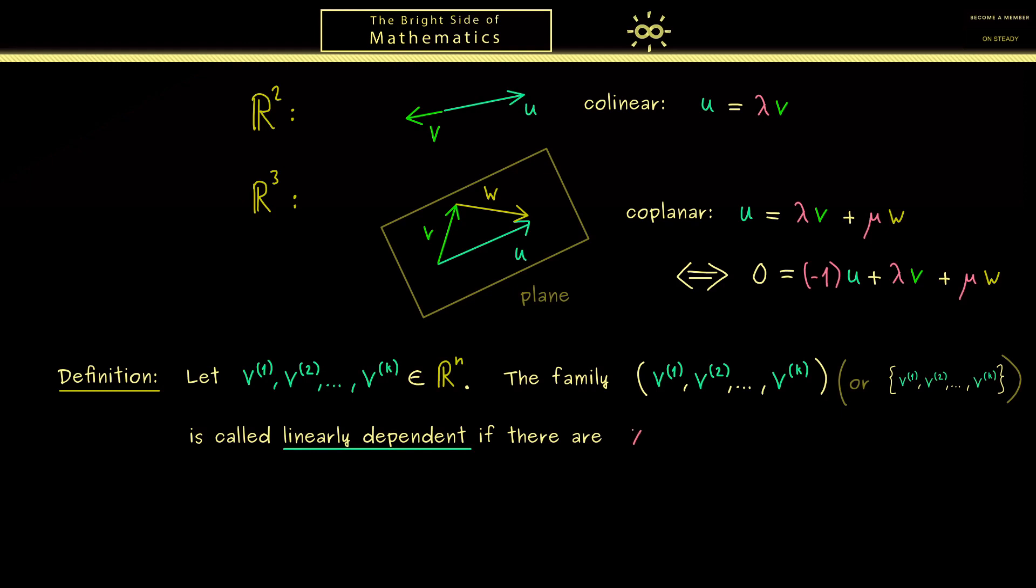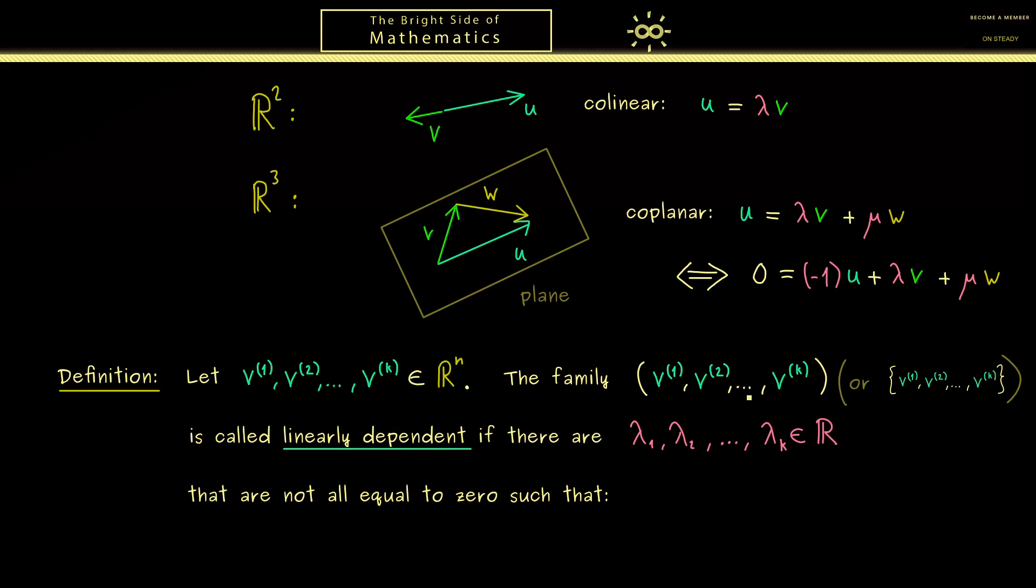Hence, what we need are k real numbers λ₁, λ₂, and so on. Now some of them could be zero, but the important thing is not all of them are zero.